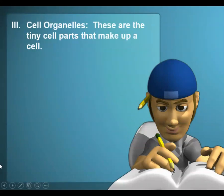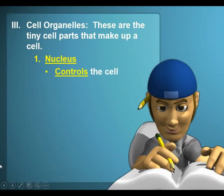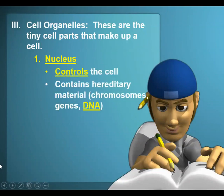We're going to go through some of these organelles — all the tiny little parts in eukaryotic cells that help the cell function. The first one is the nucleus, which controls the cell. It contains hereditary material: chromosomes, genes, and DNA.